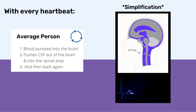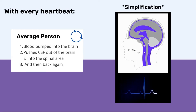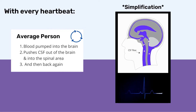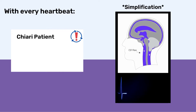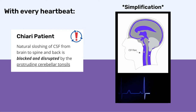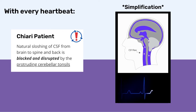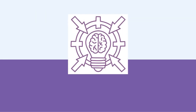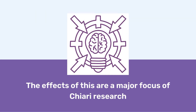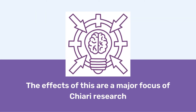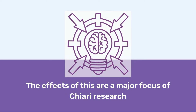With every heartbeat, blood is pumped into the brain, which then pushes CSF out of the brain and into the spinal area and back again. In a Chiari patient, this natural sloshing of CSF from brain to spine and back is blocked and disrupted by the protruding cerebellar tonsils. The effects of this are not clearly understood, but are a major focus of Chiari research.